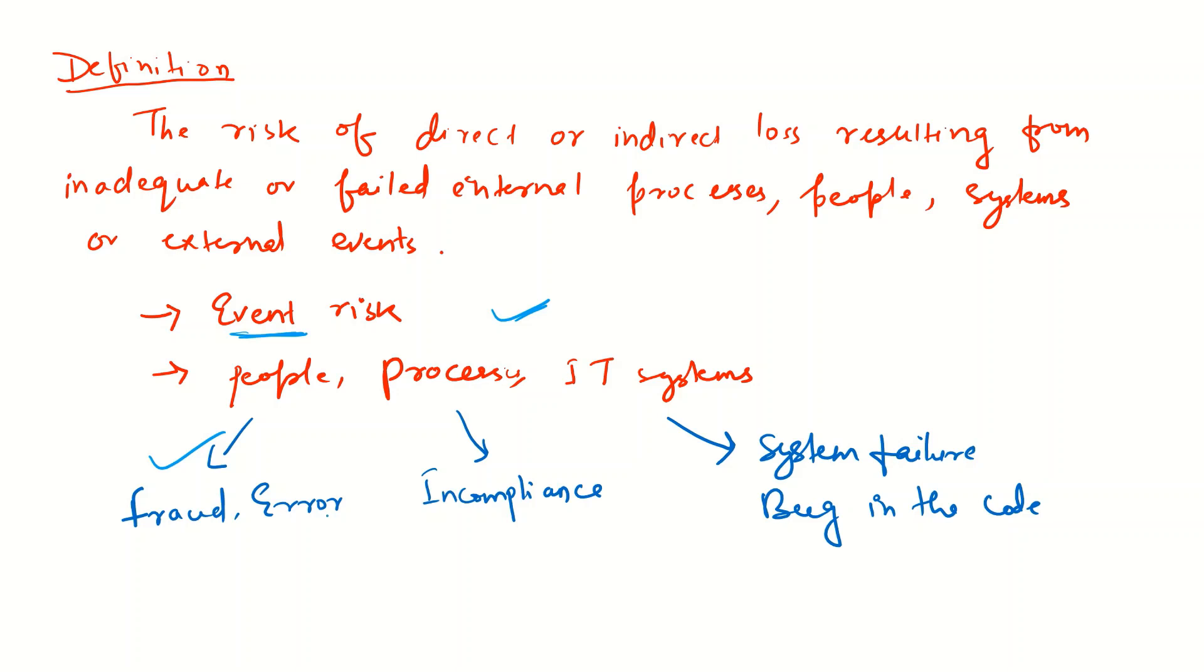Then IT systems. I think most of the operational incidents stem from IT systems these days because IT systems are vulnerable to cyber attack, vulnerable to all kinds of issues. It could be a system failure. It could be a bug in the code, in the software code.